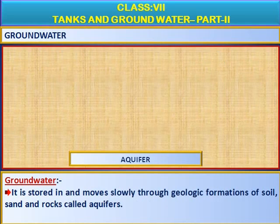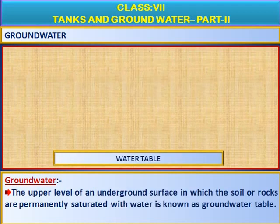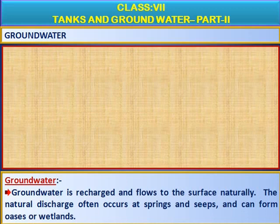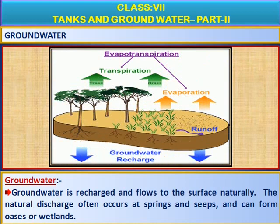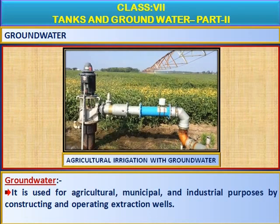Groundwater is stored in and moves slowly through geological formations of soil, sand, and rocks called aquifers. The upper level of an underground surface in which the soil or rocks are permanently saturated with water is known as the groundwater table. Groundwater is recharged and flows to the surface naturally, often occurring at springs and seeps, and can form oases or wetlands. It is used for agricultural, municipal, and industrial purposes by constructing and operating extraction wells.